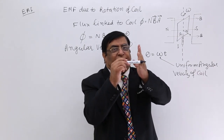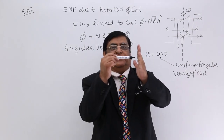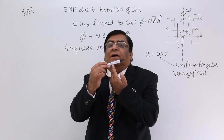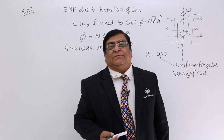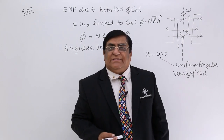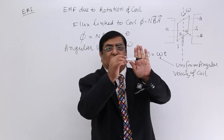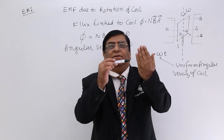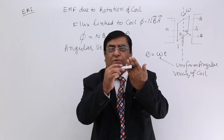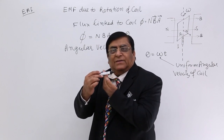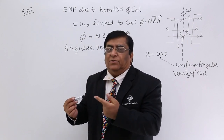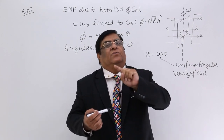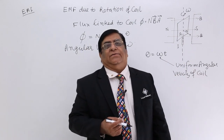You can realize when the coil is rotating, sometimes no flux is linked to it, and when it rotates 90 degrees, 100% flux is linked to it — again no flux, again 100% flux. So flux keeps oscillating: 0, phi, 0, minus phi, 0, plus phi, 0, minus phi. So flux keeps on changing.